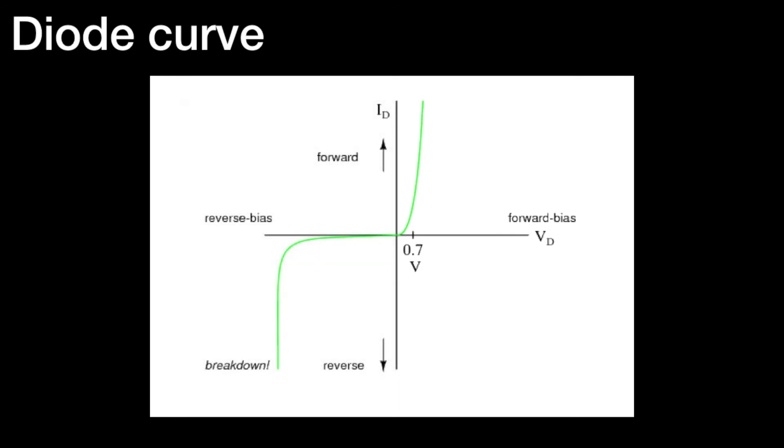That completes the introduction to semiconductors, where we've looked at p-type material, n-type material, and combining them to form a diode.